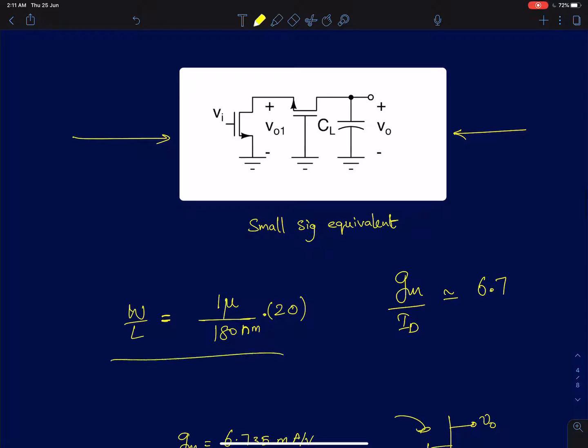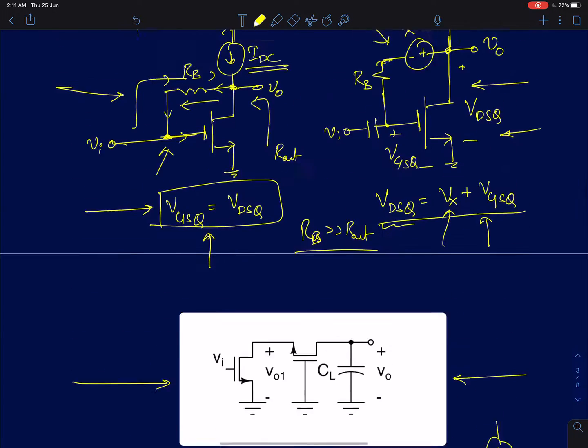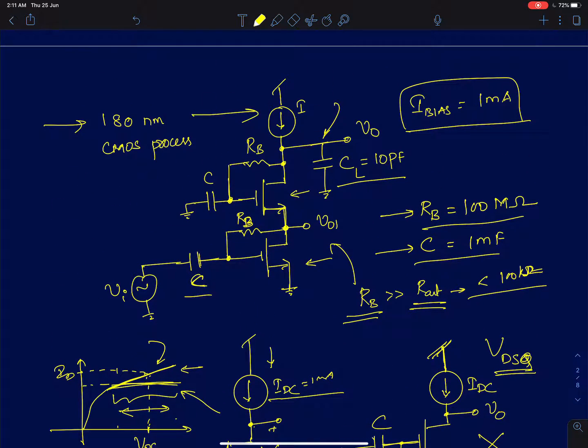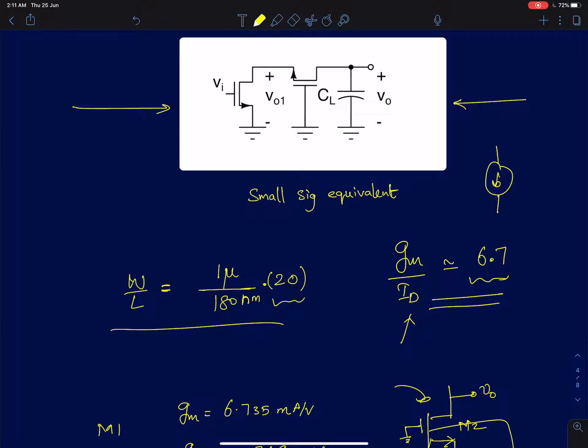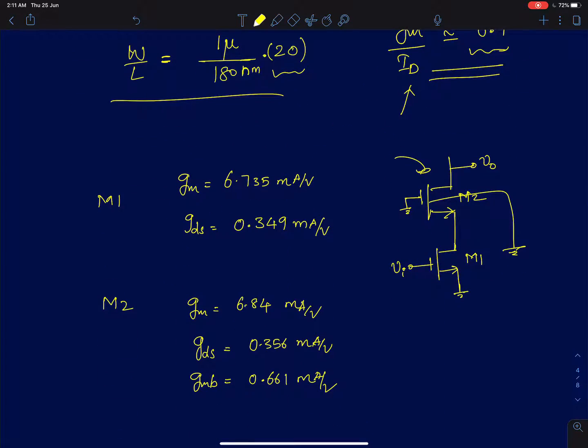The W by L sizes for these devices is 1 micron by 180 nanometers with the fingers of 20. The gm over ID for these MOS devices is close to 6.7 to 7 and I could have pushed it to a higher value but this was sufficient because in this simulation I have assumed this current source to be an ideal current source which is the current source which is feeding the cascode amplifier. I didn't have to worry about voltage headroom for the bias current. So I could live with this gm over ID ratio.